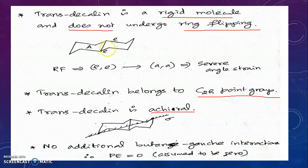The bonds at the ring junction are anti to each other — this bond and that bond are anti, and similarly the other pair is also anti. Therefore the fusion of the two rings does not introduce any additional butane-gauche interaction in the molecule. Since there is no additional butane-gauche interaction, the potential energy of trans-decalin's conformation is assumed to be zero.